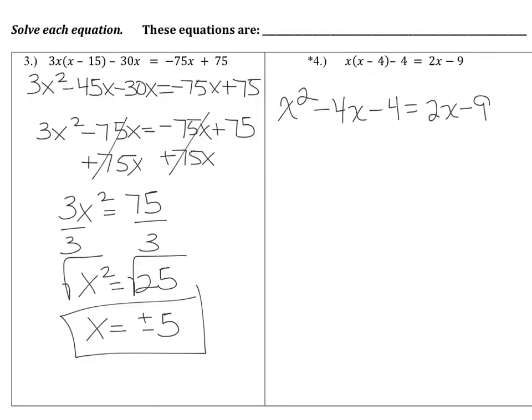For question number three, the tricky part is that you end up with a squared variable. After distributing and combining like terms, you get negative 75x on both sides, which cancel out, leaving 3x squared equals 75. You can then isolate the variable by dividing both sides by 3.